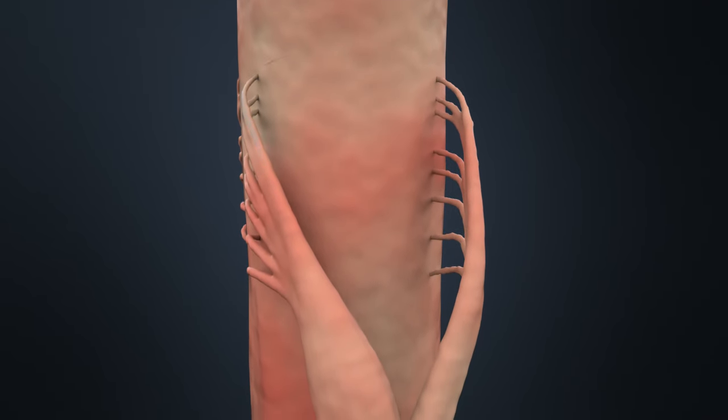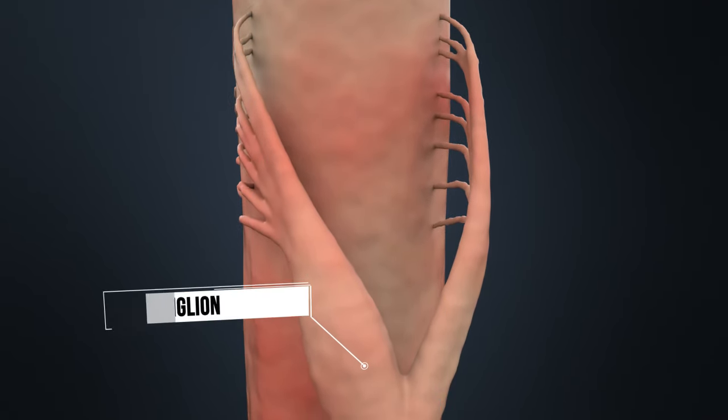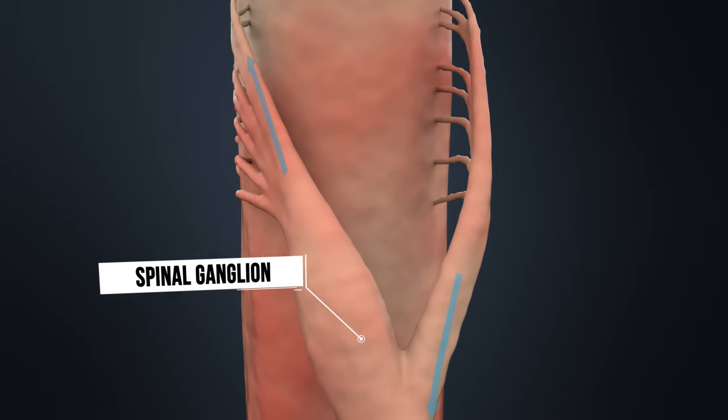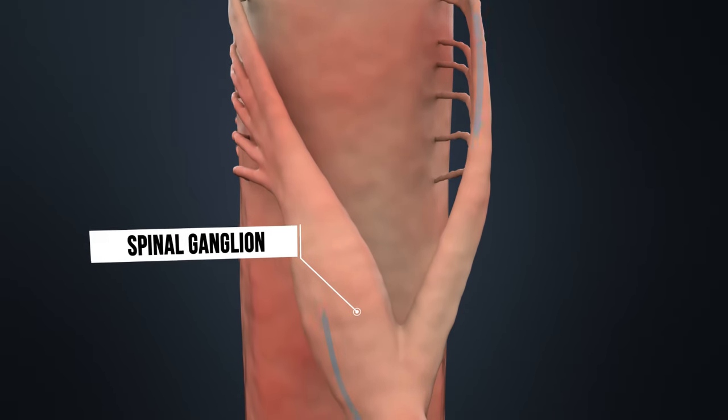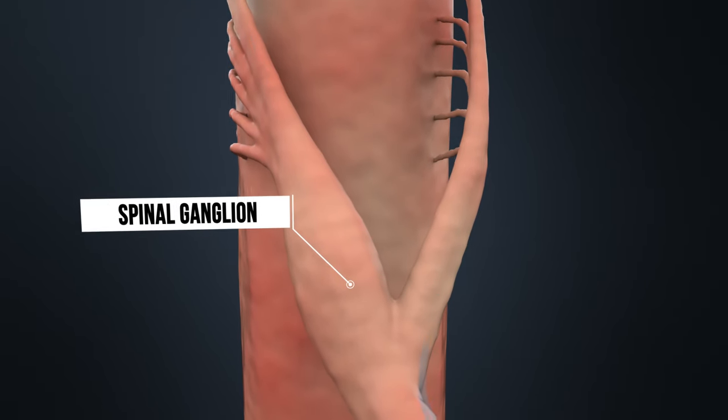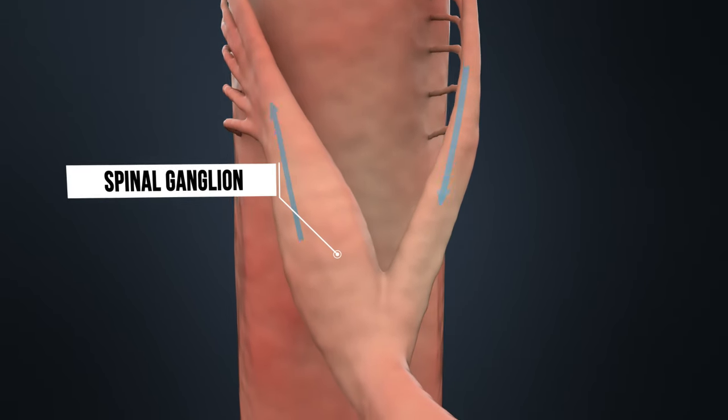We will take a closer look at the thickening that we call spinal ganglion, or dorsal root ganglion, in a moment.